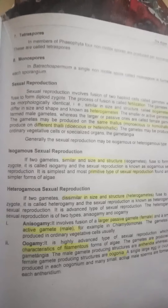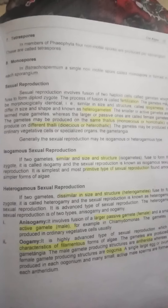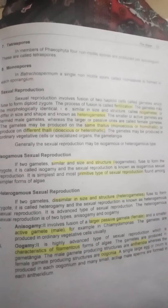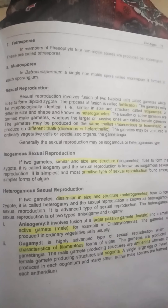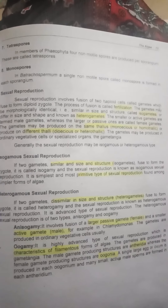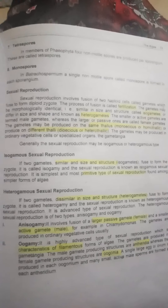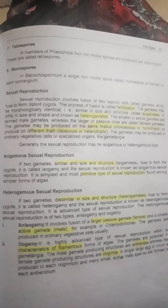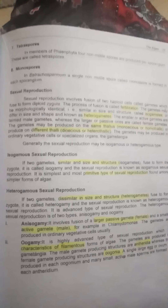In algae, there are basically gametes and fertilization. Male gametes are basically sperm and egg. If gametes are the same size, they are called isogametes. If they are different in size and shape, they are called heterogametes. Normally, heterogametes are larger in size for female and smaller in size for male gametes. They are morphologically different.